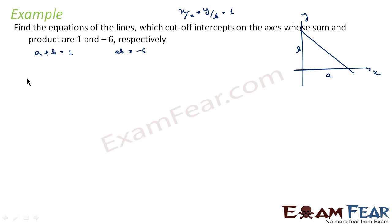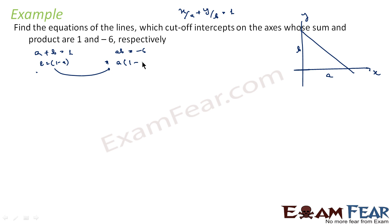So what we do here is say B is equal to 1 minus A, because A plus B is equal to 1. We substitute this into AB equals minus 6, so A times (1 minus A) equals minus 6. Expanding: A minus A squared plus 6 equals 0.